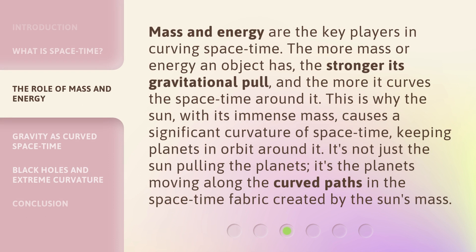Mass and energy are the key players in curving space-time. The more mass or energy an object has, the stronger its gravitational pull, and the more it curves the space-time around it. This is why the Sun, with its immense mass, causes a significant curvature of space-time, keeping planets in orbit around it. It's not just the Sun pulling the planets — it's the planets moving along the curved paths in the space-time fabric created by the Sun's mass.